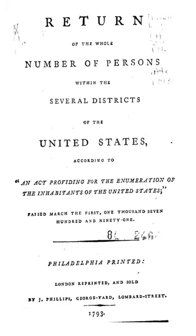The 1850 Census saw a dramatic shift in the way information about residents was collected. For the first time, free persons were listed individually instead of by head of household. There were two questionnaires: one for free inhabitants and one for slaves. The question on colour was a column left blank if a person was white, marked 'B' if black, and 'M' if mulatto. Slaves were listed by owner, classified by gender and age, and the color column used 'B' for black and 'M' for mulatto.